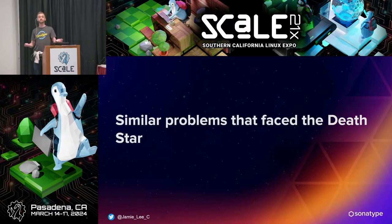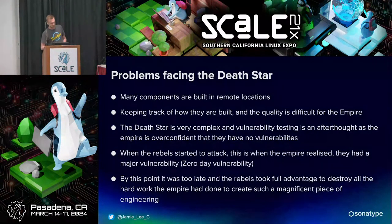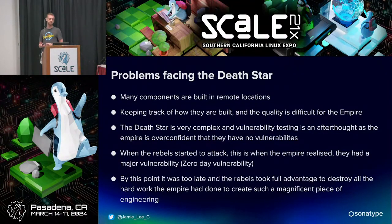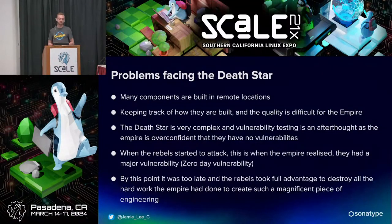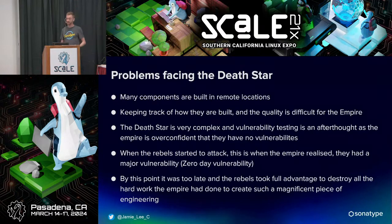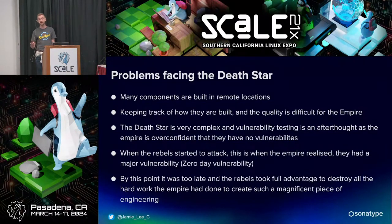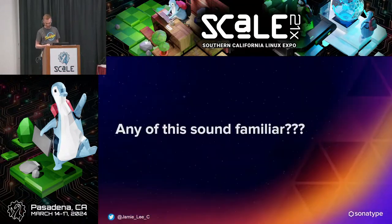Similar problems essentially faced the Empire with the Death Star — many components were built in remote locations, keeping track of how they were built and the quality was difficult. The Death Star is massive and complex. Vulnerability testing is generally an afterthought with a lot of developers. The Empire was confident they had no vulnerabilities, confident they built the best weapon in the galaxy. But when the Rebels attacked and the Empire realized they had a vulnerability quite late, they couldn't really do much. Nowadays we don't have much time to react to security vulnerabilities — it's down to usually a few days.